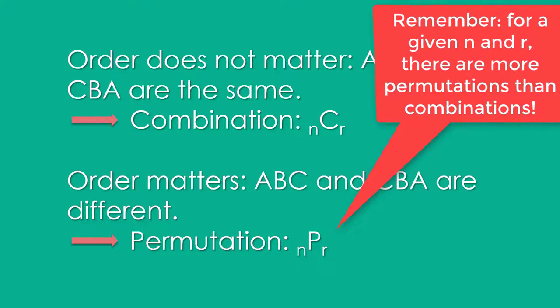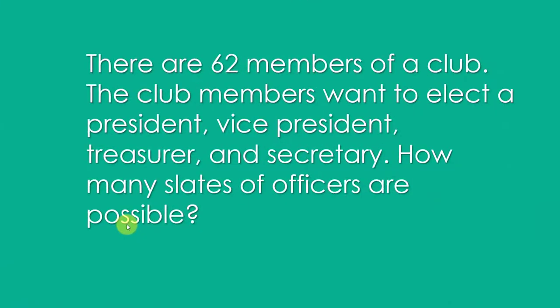So let's take a look at an example. There are 62 members of a club. The club members want to elect a president, vice president, treasurer, and secretary. How many slates of officers are possible?